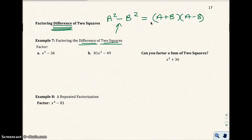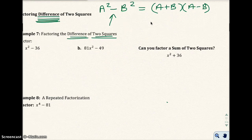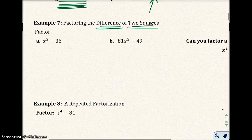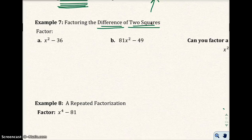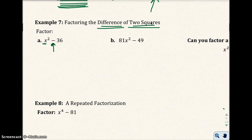The squares you should have memorized or be able to recognize from the p.3 section. So let's look at example 7. I have x squared minus 36. Here is the difference — that subtraction sign means difference — and x squared is a square and 36 is a square.